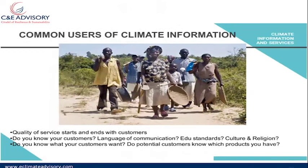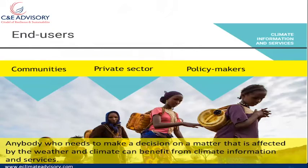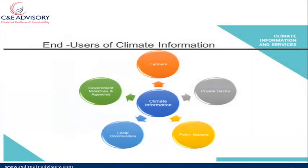This slide summarizes the five groups of users who are also potential co-producers and end users of climate information: farmers, private sector, communities, policymakers, and government ministries and agencies. Anyone who needs to make a decision on a matter affected by weather and climate can benefit from climate information service.